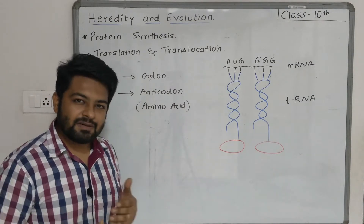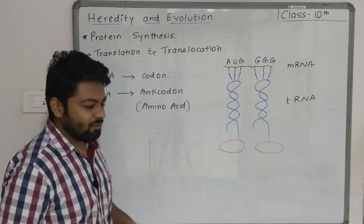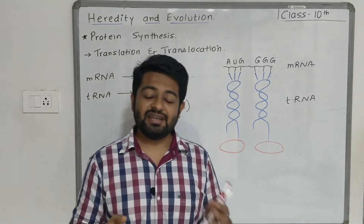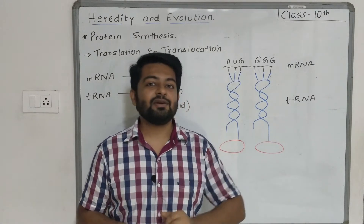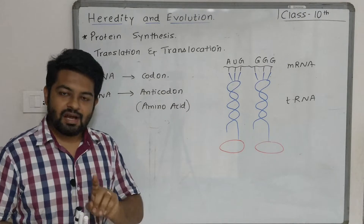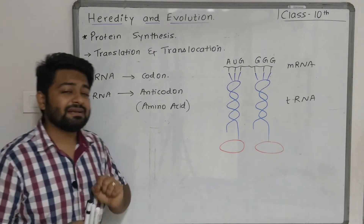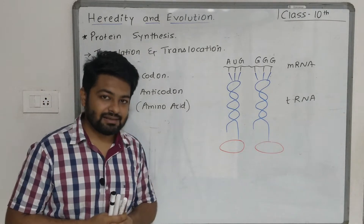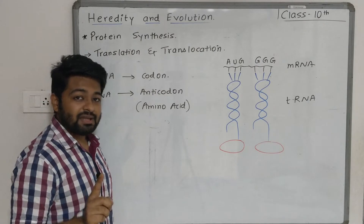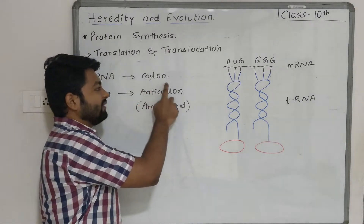Before understanding translation, let's review some basics. We had seen earlier that there are three types of non-genetic RNA: mRNA, rRNA, and tRNA. The rRNA already provides the binding site for mRNA. On the mRNA there are triplets of nucleotides — we had seen this last time — and those triplets of nucleotides present on mRNA are called codons.